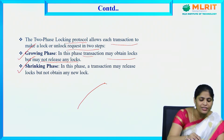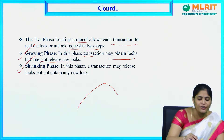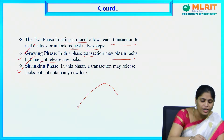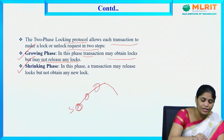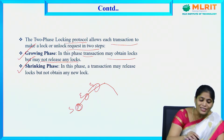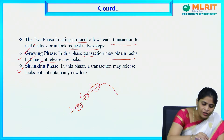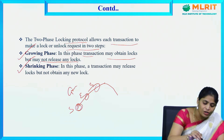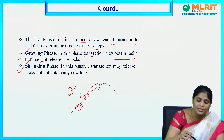In the shrinking phase, whatever locks were acquired — shared locks and exclusive locks — will be released. The growing phase is the lock-acquiring stage, and the shrinking phase is the lock-releasing stage.